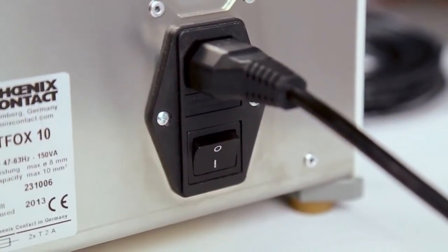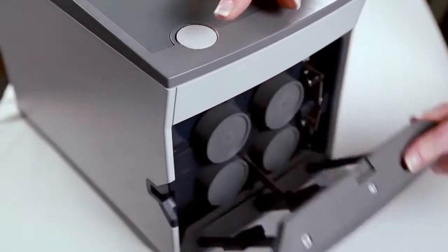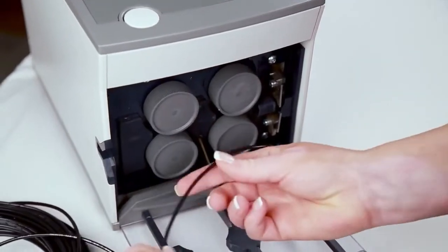Power on the device, the switch is in the back. Press the door release button on the top of the machine and gently open the door downward. Feed the wire into the machine.